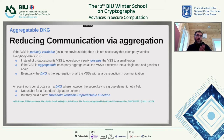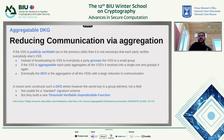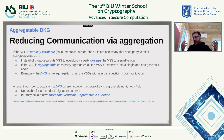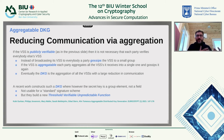What they are able to build is a threshold verifiable unpredictable function, which you can think of as a unique signature. If you're willing to depart from standard signature schemes, and you're building an application from scratch where you're not bound to use Schnorr or DSA, you can put this new signature scheme in and hopefully avoid backwards compatibility problems with legacy schemes. In these limited applications where we can deploy something new, this is a very interesting contribution.